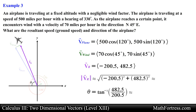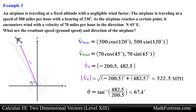The magnitude is approximately 522.5 miles per hour. Using inverse tangent we get 67.4 degrees, but we need to adjust this angle for air navigation conventions. Adjusting the angle, we obtain 337.4 degrees. So the new speed of the airplane would be 522.5 miles per hour at a bearing of 337.4 degrees.